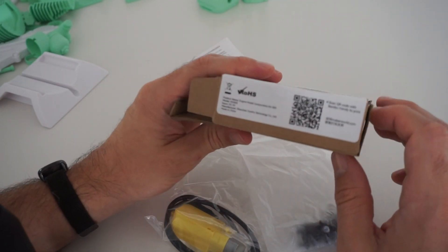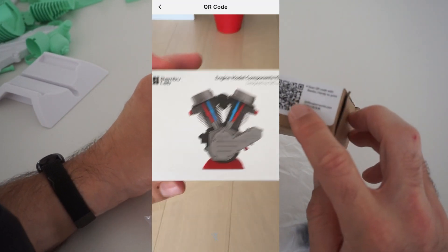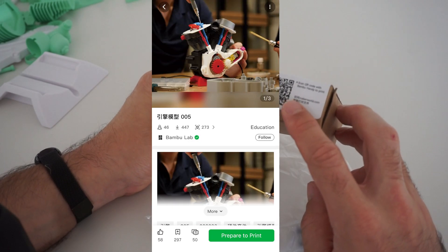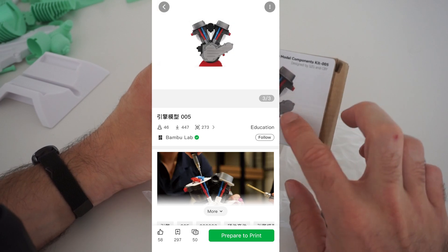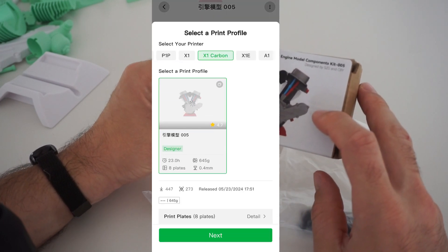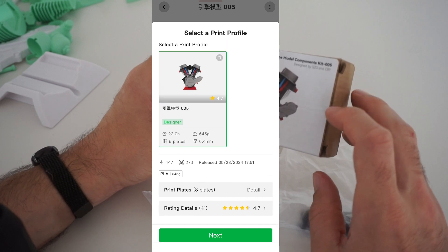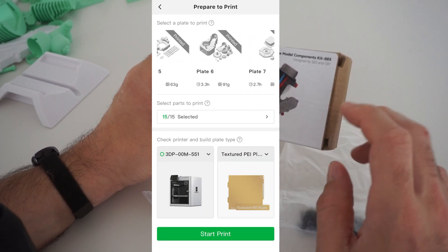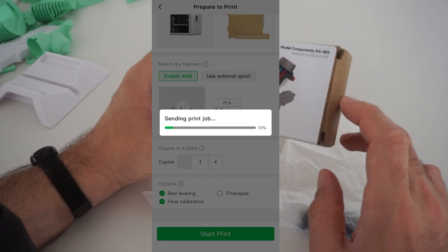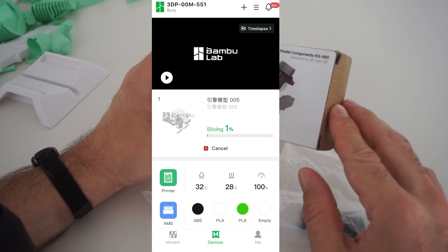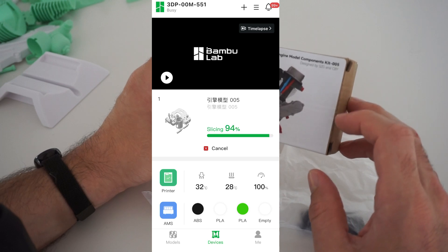Basically what you're going to do is in your Bamboo Handy app you're going to scan this QR code here and that will bring up all the 3D models that you need to print out. If you have a Bamboo Labs 3D printer it'll have the pre-sliced plates so you just open those on your phone, select them, print them out and it's pretty simple and slick to do except there's like eight plates of parts you need to print this whole thing.